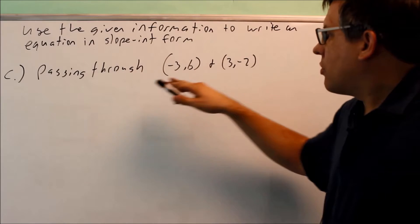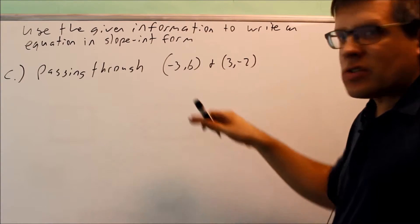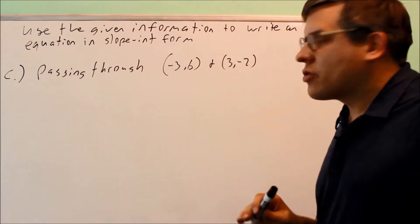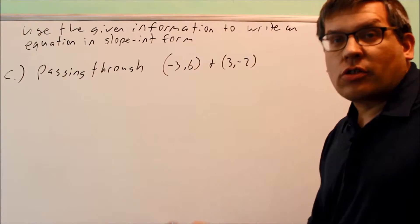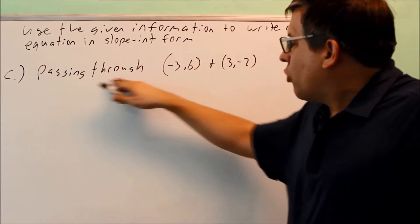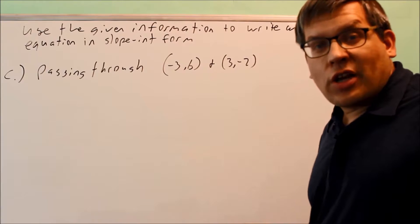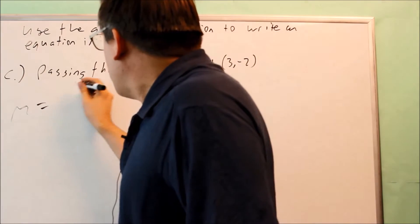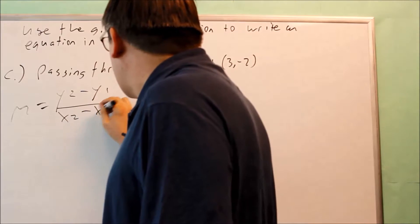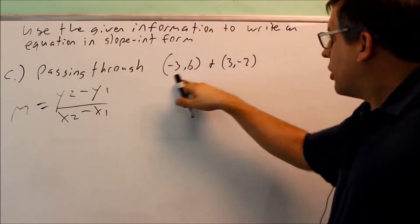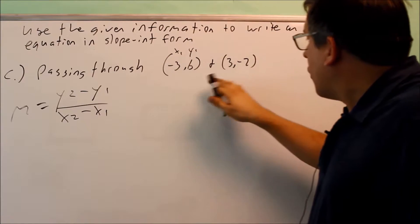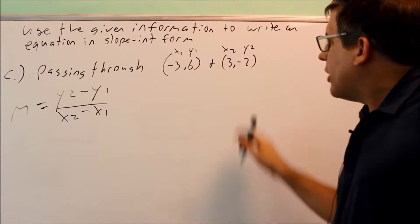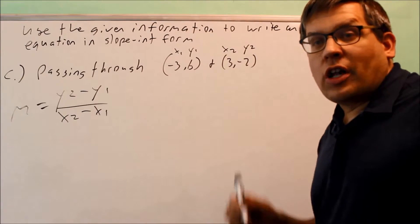For part C, we're given two points: negative 3, 6 and 3, negative 2. We only need to find the slope-intercept form — we'll use point-slope on the way, but the final answer should be in slope-intercept form. What's different from parts A and B is that the slope is not given. However, we have the slope formula: y2 minus y1 over x2 minus x1. We label the points as x1, y1 and x2, y2 — it doesn't matter which is which — and substitute them into the slope formula.